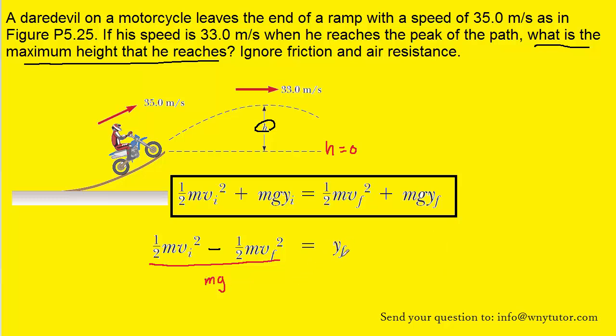So we have successfully isolated the final height of the motorcyclist. We'll notice on the left side that the term m appears in all three terms in the equation. So what that means is that we can eliminate it from the equation. It's essentially dividing out. And once we do that, we'll notice that the remaining terms are completely known. The initial speed and final speeds of the motorcyclist were given in the question. And then, of course, the value of g is 9.8. So we can plug all of the known information in to solve for y-f.